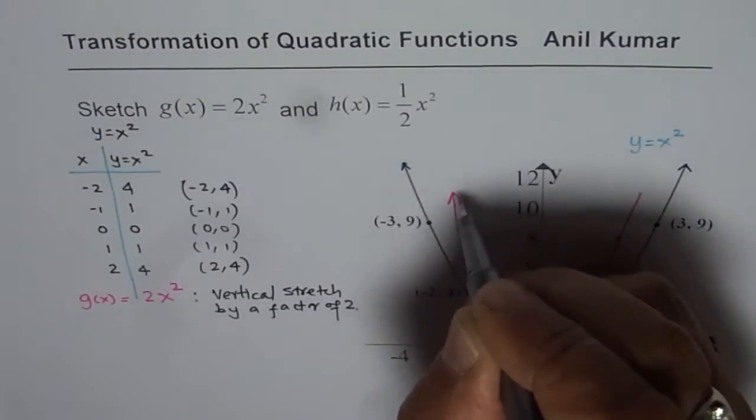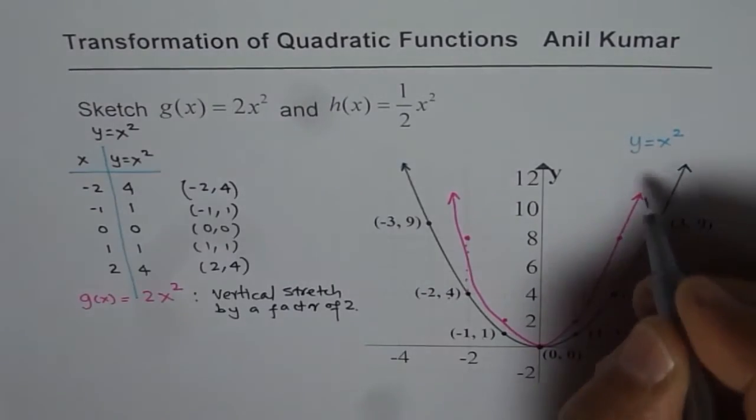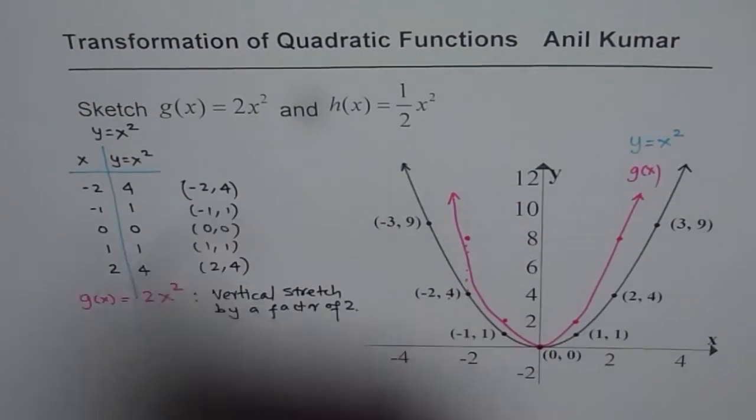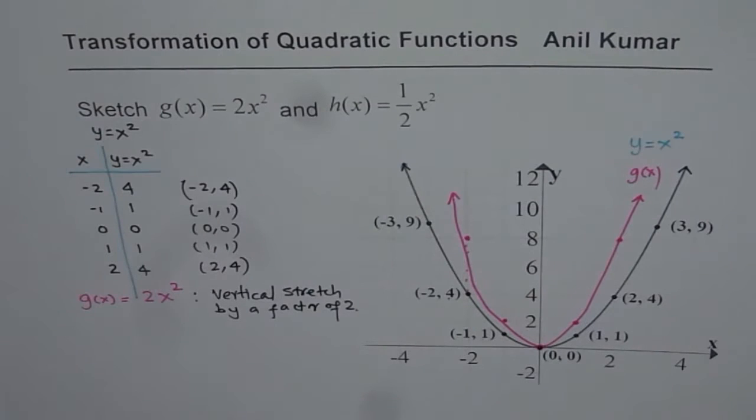Now joining these points we get our parabola. So try to make a smooth curve and this will represent g of x which is 2 times x square.